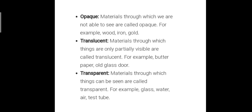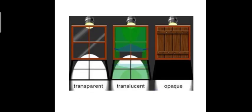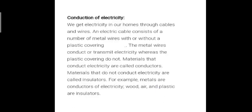Transparent materials are those through which the whole ray of light can pass and we can see clearly through them — examples include glass, water, and test tubes. Looking at the visual: in opaque materials like a door, no ray of light passes through; in translucent materials only partial light passes giving a blurred view; and in transparent materials like a glass window, the whole ray of light passes through.